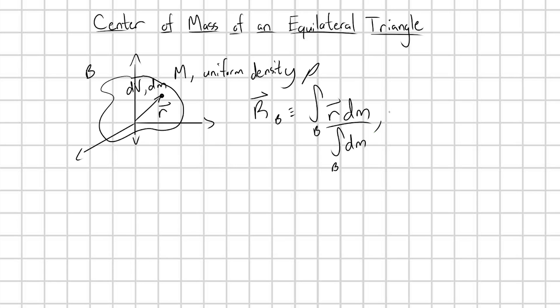We know that we can very quickly rewrite dm as equal to the mass density ρ times each infinitesimal volume element that the infinitesimal masses occupy.